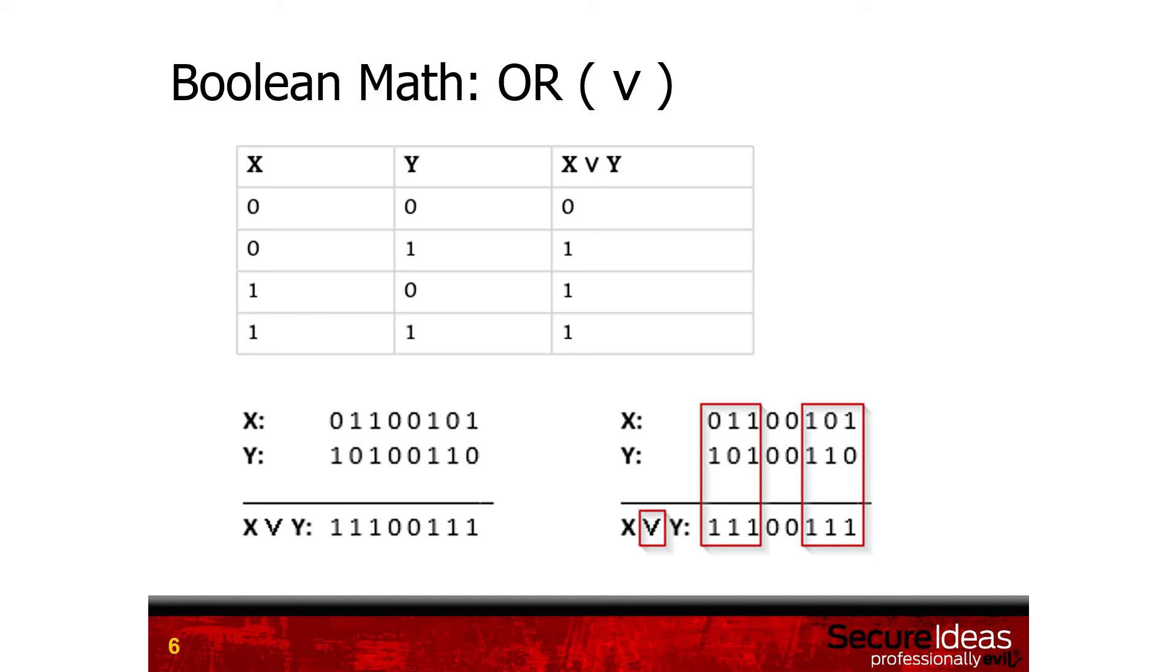When you're done, you're going to have a solution that looks like this. You've compared all the columns, X and Y, and any place where either X or Y is true, the result is true. Otherwise, the output is false or 0.